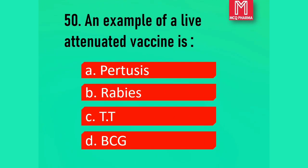Question number 50. An example of live attenuated vaccine is: Option A, Pertussis. Option B, Rabies. Option C, T. Option D, BCG. Correct answer: Option D, BCG.